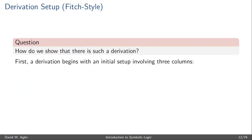Here we'll look at how to set the proof up, and in later videos I'll look at how to fill in these middle steps. A derivation or proof begins with an initial setup, and we'll take a particular approach that makes use of three main columns. The first column is just for listing the formulas, premises, or any of the lines in the proof, so we can refer back to them — for example, saying 'I used line two and line four.'